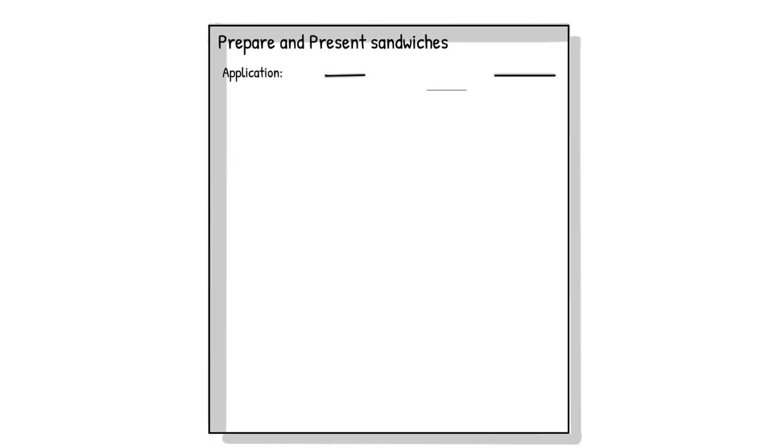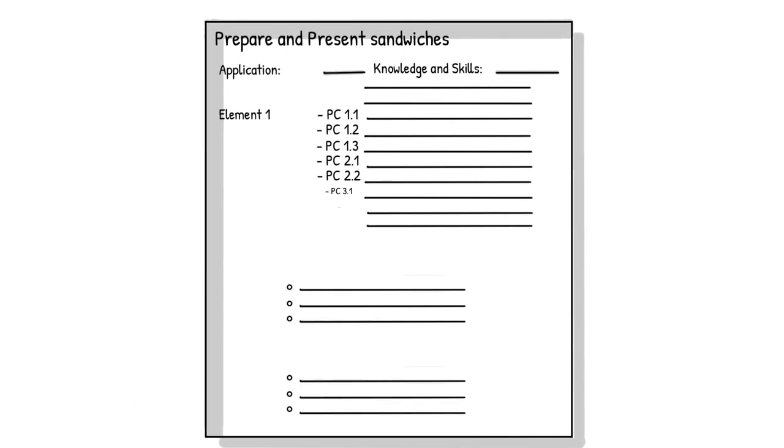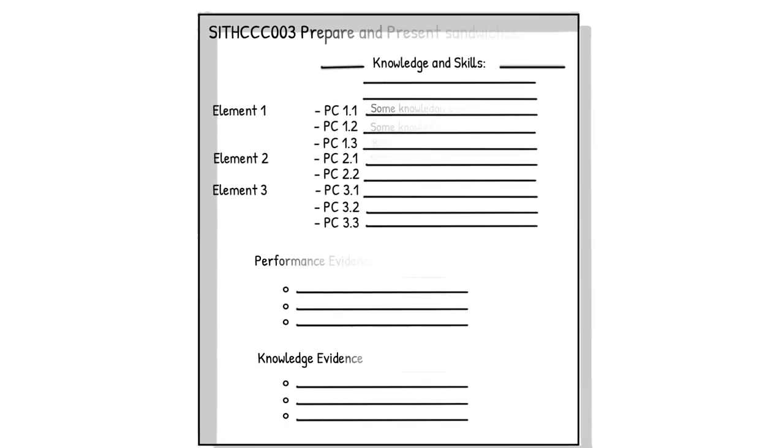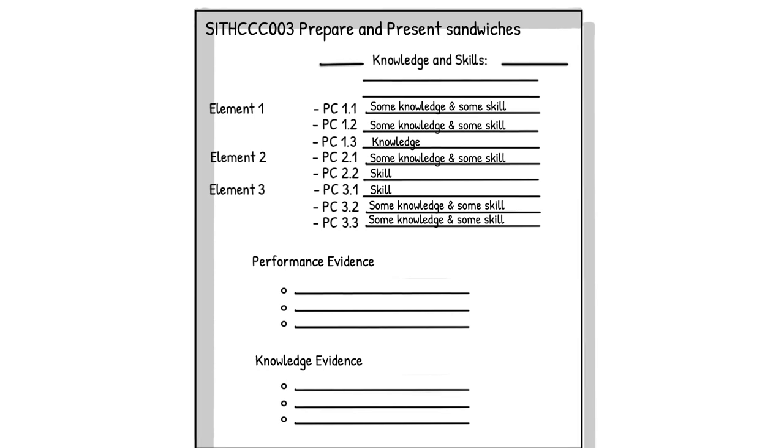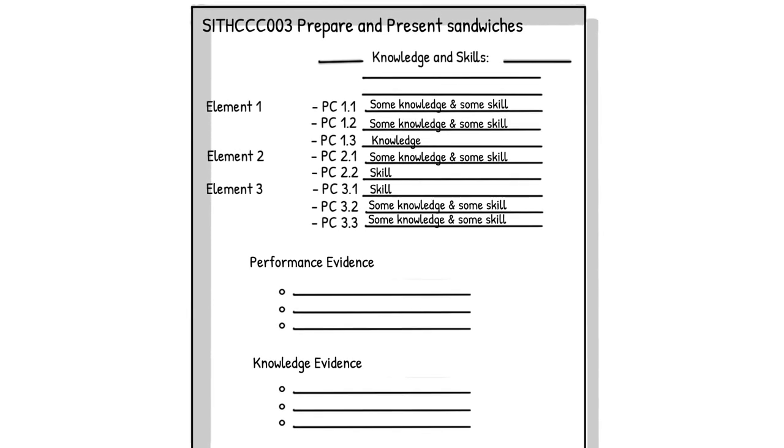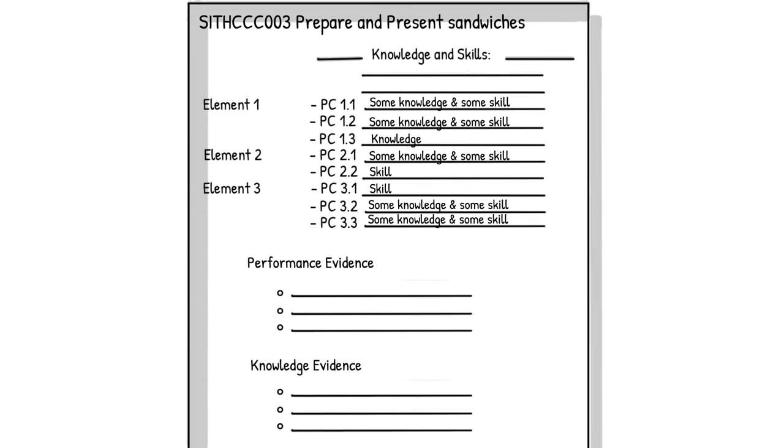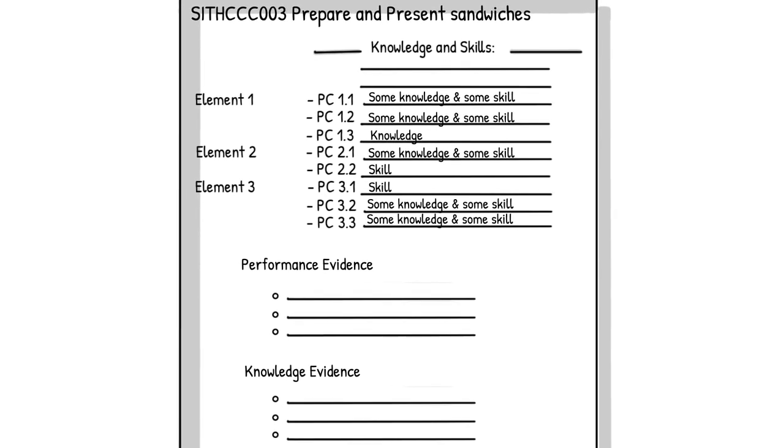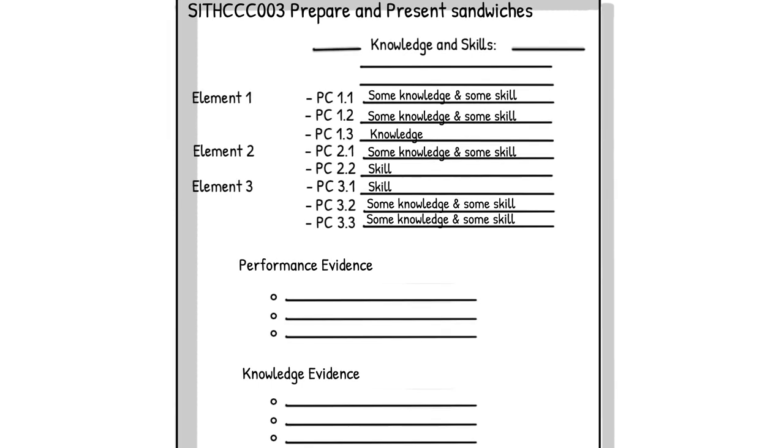Units of competence tell us what to train and assess, plus give some guidance on how this can be done. Each unit of competency is broken down into its code and title, application, specific elements, performance criteria, knowledge evidence, performance evidence, foundation skills and assessment conditions.